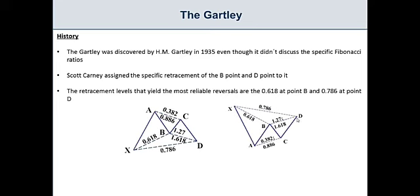As well as the C leg, CD leg, which has to retrace a full amount of 78.6 of the XA leg for us to get a valid bearish Gartley and for us to be able to short this area.